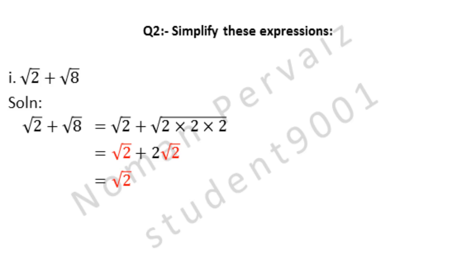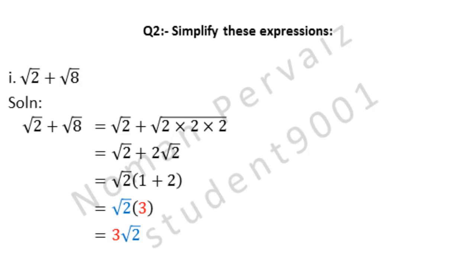Since under root 2 is common in both terms, we take it as common. Under root 2 is common, so 1 will remain from the first term, plus 2 will be left from the second term. So we get under root 2 times (1 + 2), which equals under root 2 times 3. We write 3 first and under root 2 last. This is our final answer: 3 under root 2.